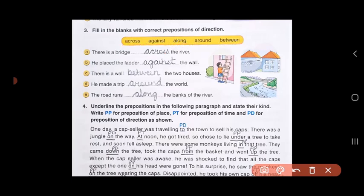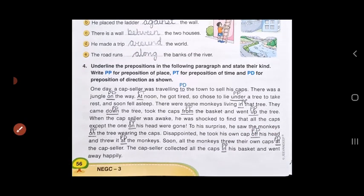Now children, let's do the last part, number 4. Underline the prepositions in the following paragraph and state their kind. What have we studied? The three kinds of preposition: preposition of place, preposition of time, and preposition of direction. So you have to read this paragraph and underline the prepositions and label them. Write PP for preposition of place, PT for preposition of time, and PD for preposition of direction. So let's begin.